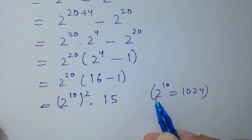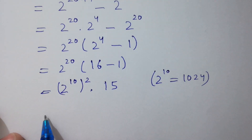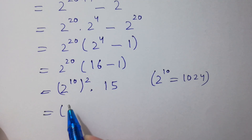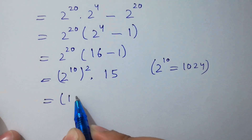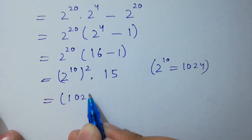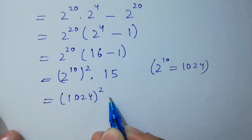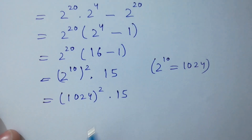So here, 2 to the power 10 gives us 1024, meaning we have 1024 to the power 2, times 15.